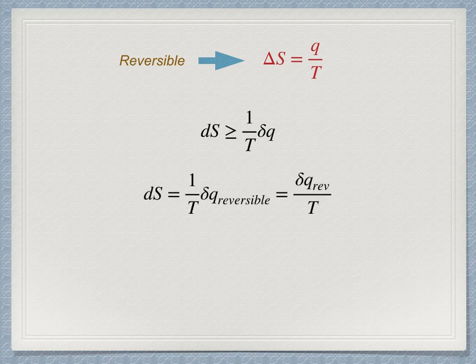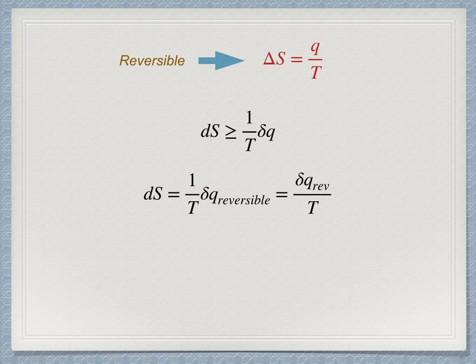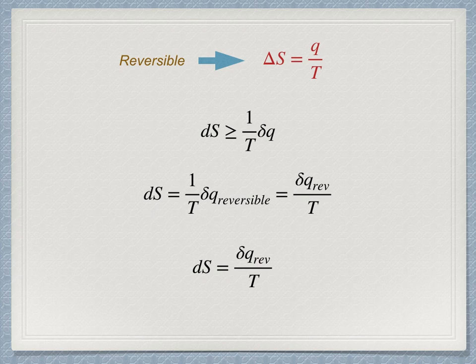In some cases, it is possible to exchange an inexact differential, turn it into an exact differential, by the use of an integrating factor and the specification of the path. This is what happens here. The integrating factor is 1 over T, and the path is specified to be reversible. With that, we obtain the relation dS equals delta q reversible over temperature.